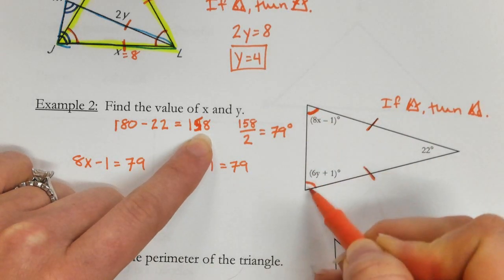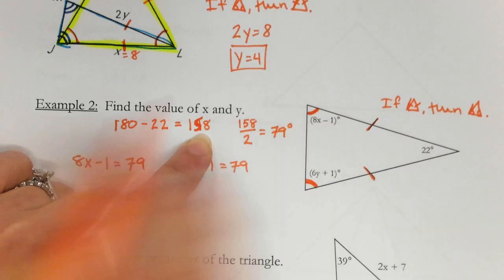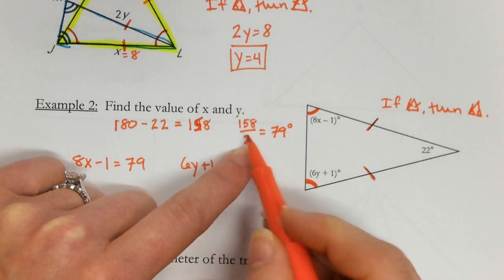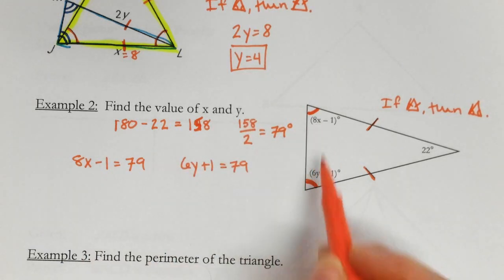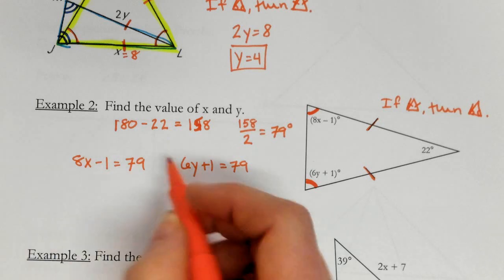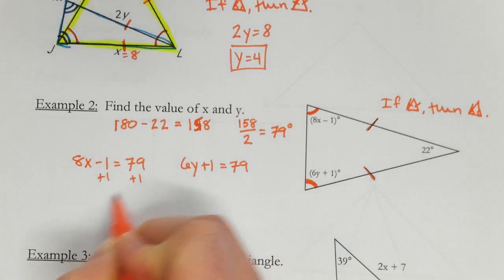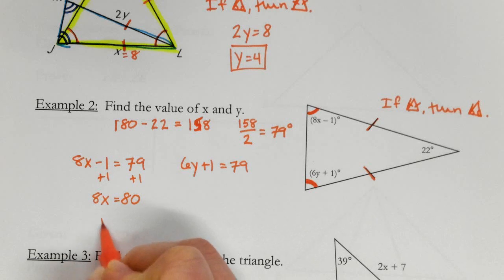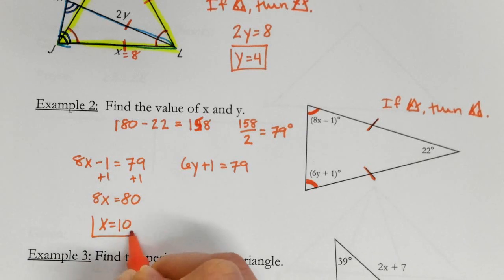Well, now I know that both of these equal 158. Well, if they're the same, I can just divide by 2. So now I know what each one of those pieces equal. And now I can just solve each equation.